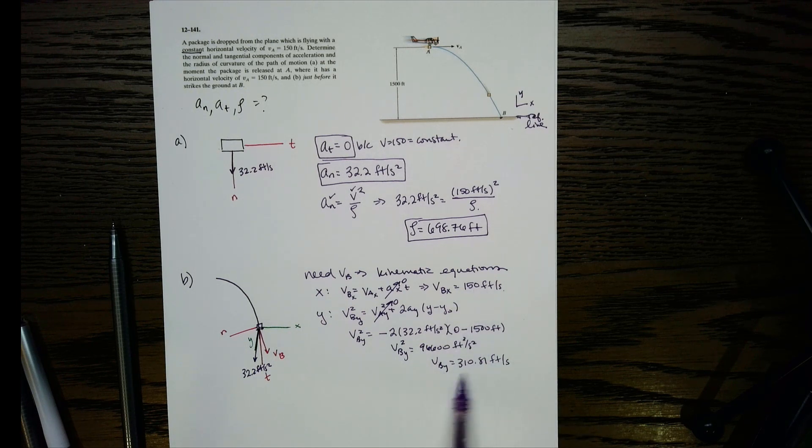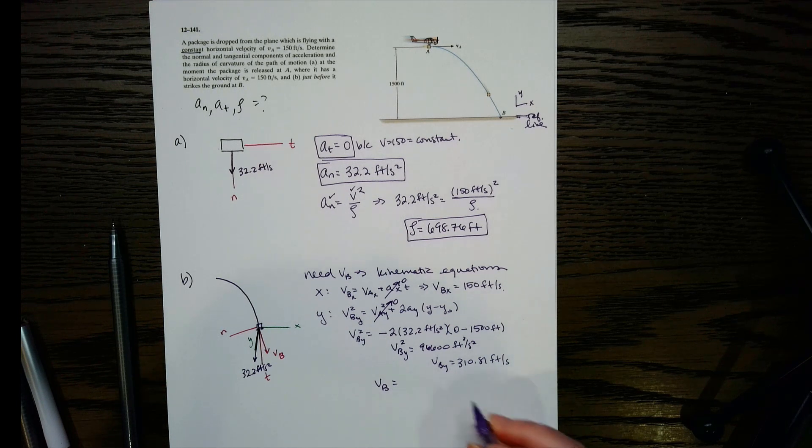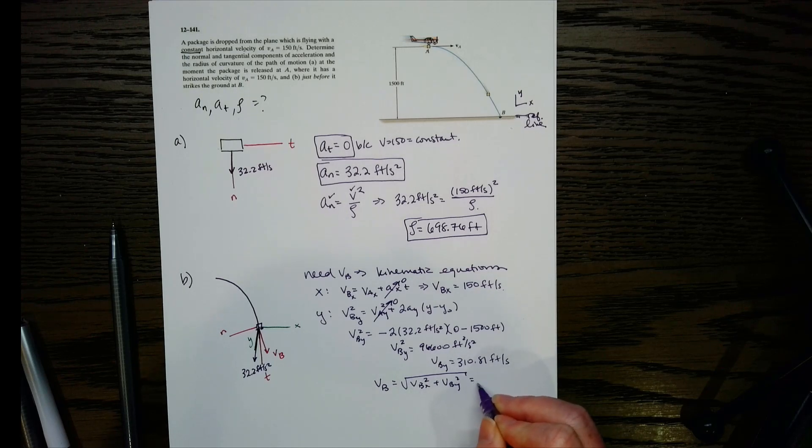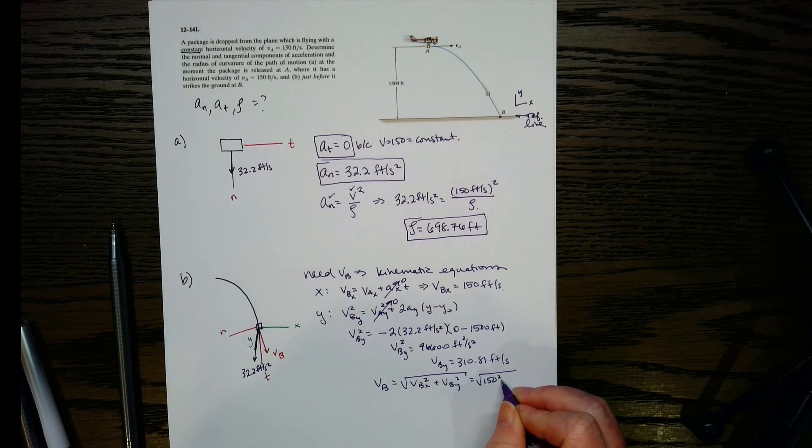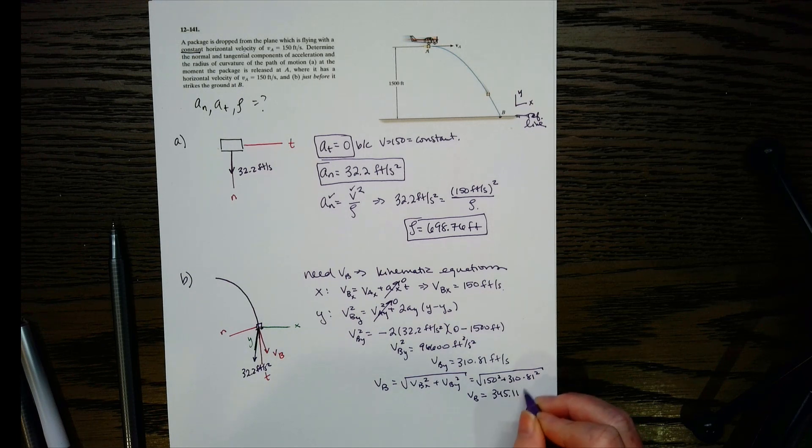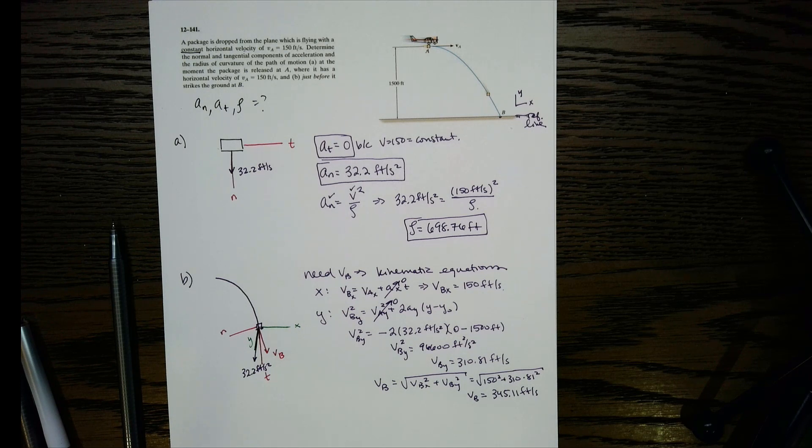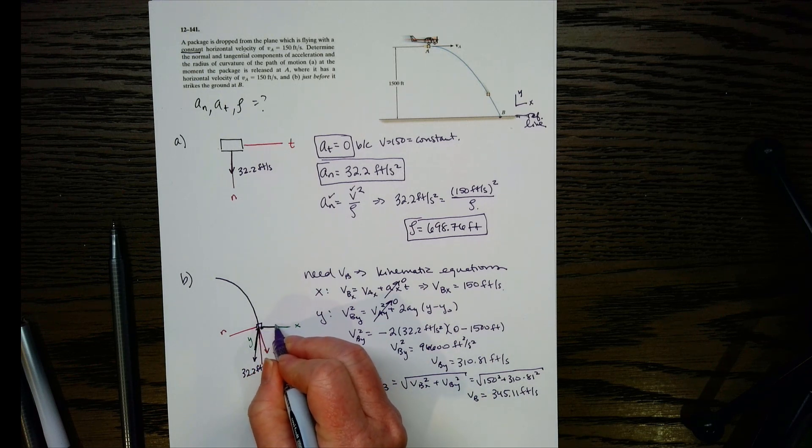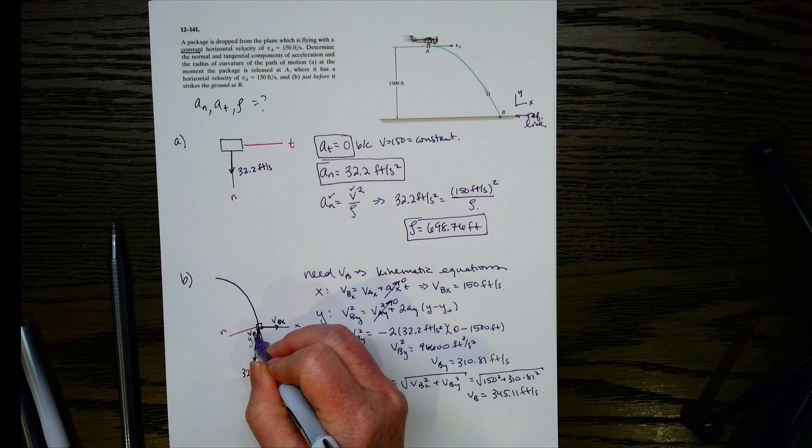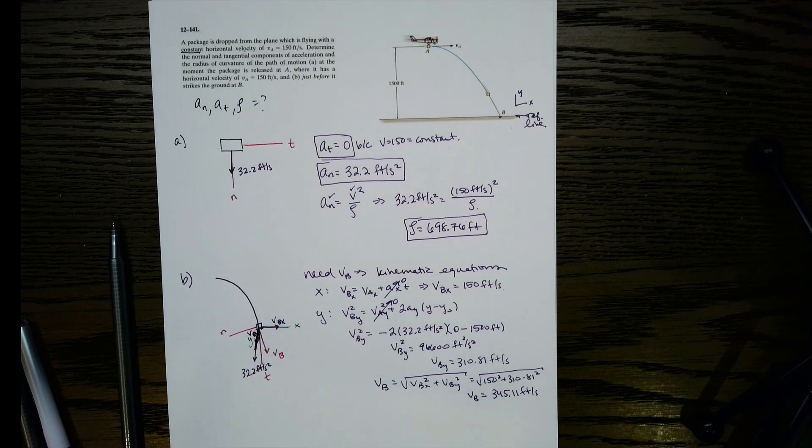Now we've got our VBX, our VBY, so we can find the magnitude at B. We're just going to do VBX squared plus VBY squared, take the square root. So we got 150 squared plus 310.81 squared, take the square root of that, and then VB is 345.11 feet per second. So now we've got this. If you wanted to write it over here, you could. So we would have our VBX going in this direction, and then our VBY would be going down here. So this is our velocity, magnitude velocity at this point.